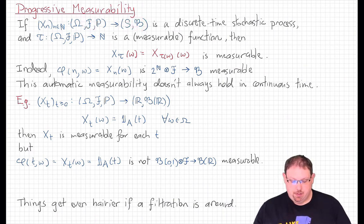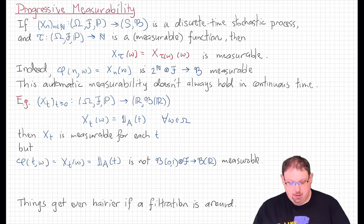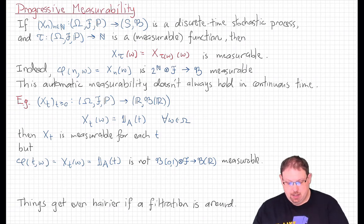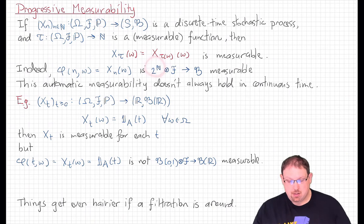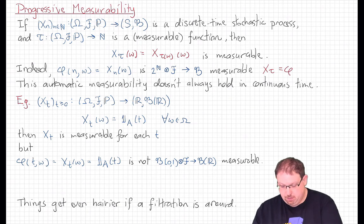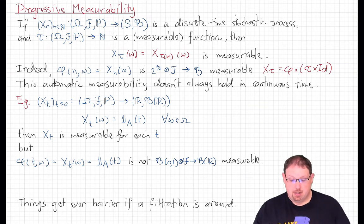One way to view the measurability of that random variable is just to note that it is a composition of this map with τ. This views X_n(ω) as a function of two variables, n and ω, and it is straightforward to check that this is measurable in both variables on the product sigma field, simply because the sigma field on the discrete set of natural numbers is going to be the full sigma field of all subsets. Then we can evaluate X_τ as the composition of φ with τ times the identity map, which is a composition of measurable maps.